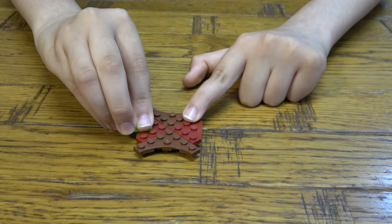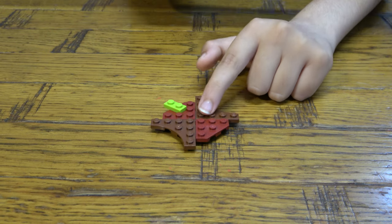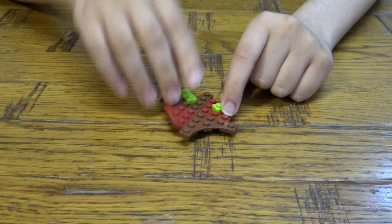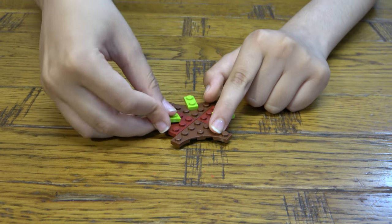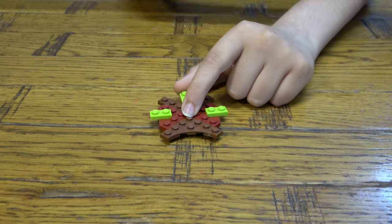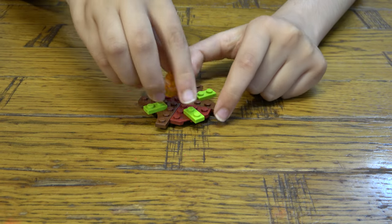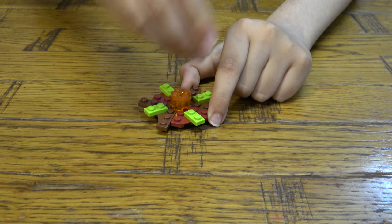And then you're going to get four greens, you're going to put them on each of these ones over here, and then you're going to put the handle and one of these on top.